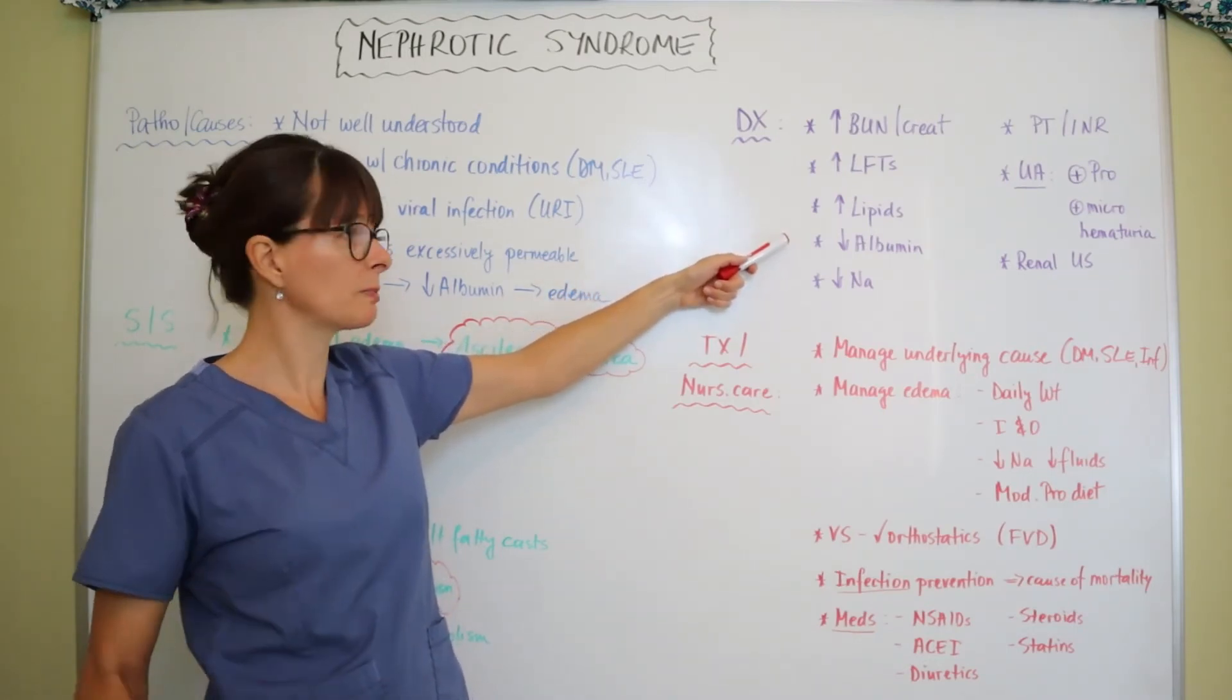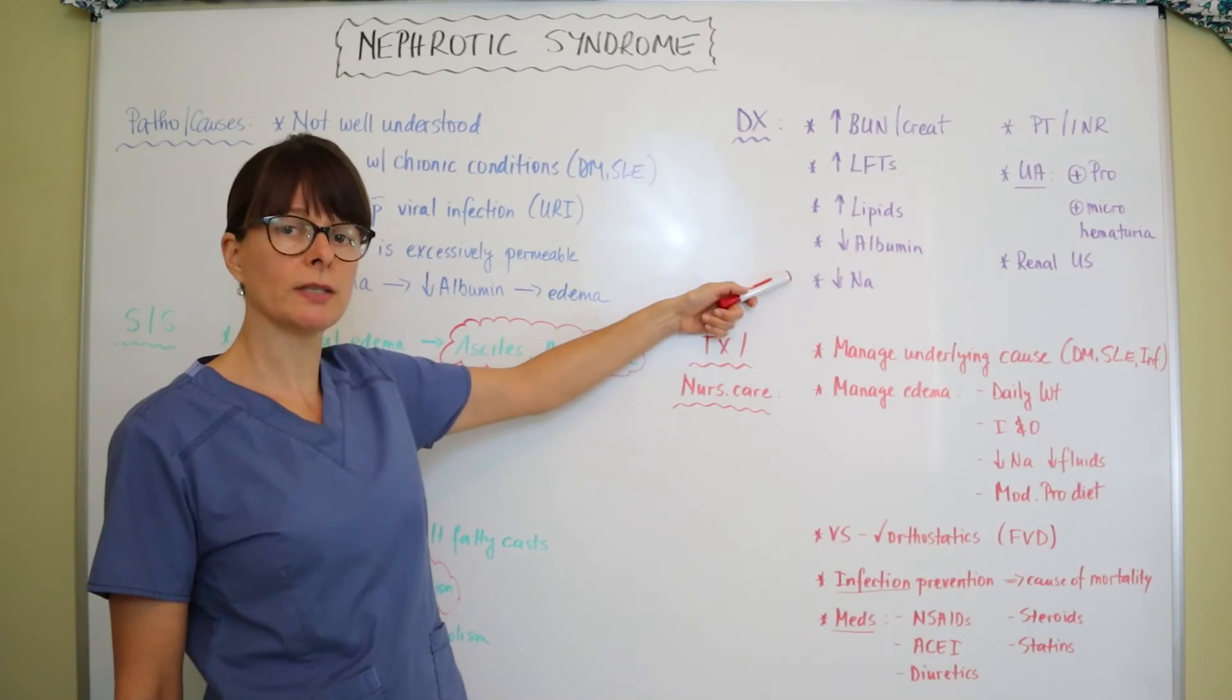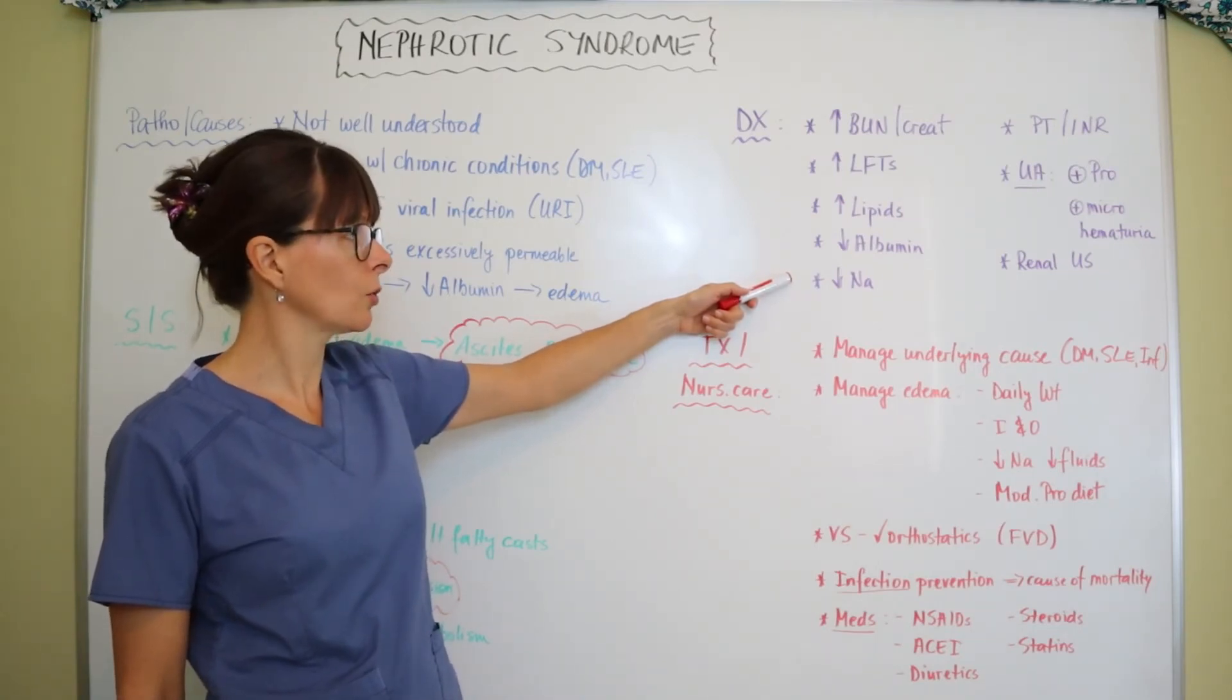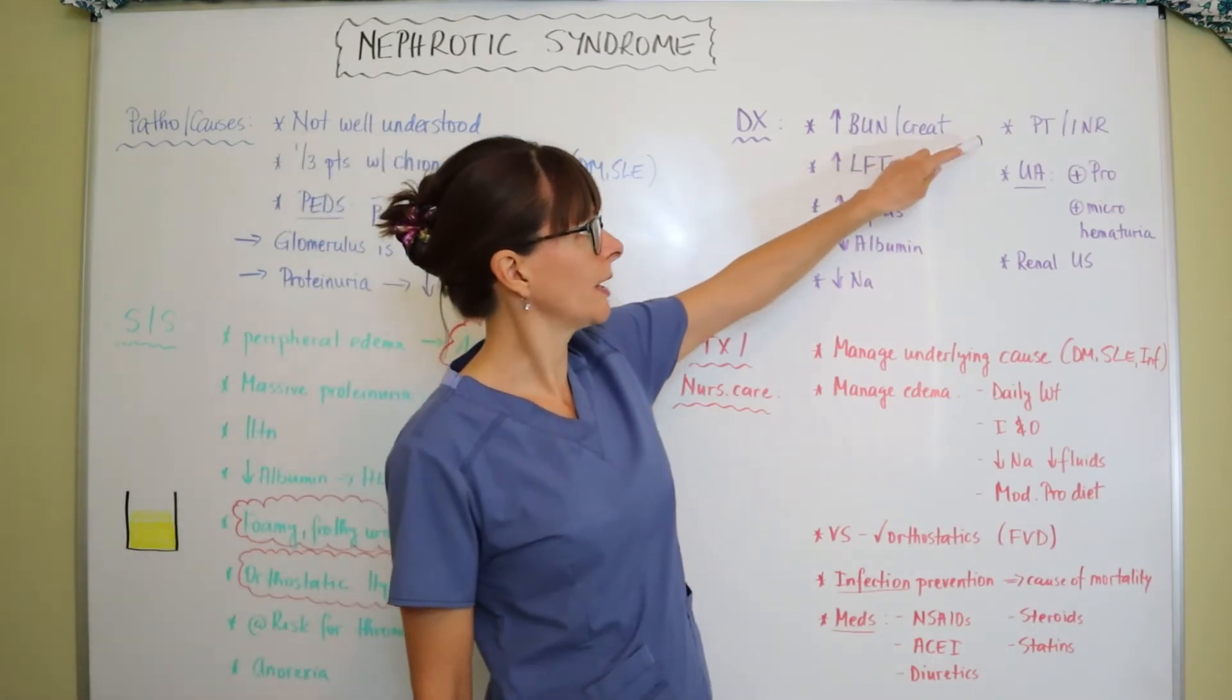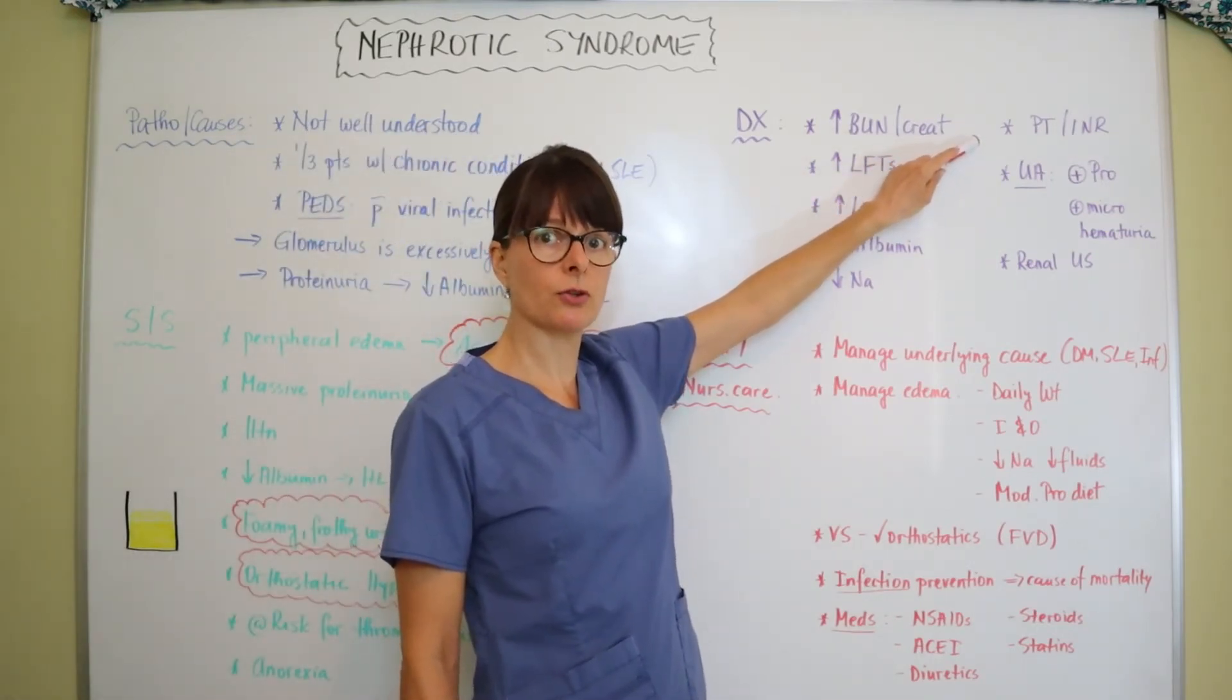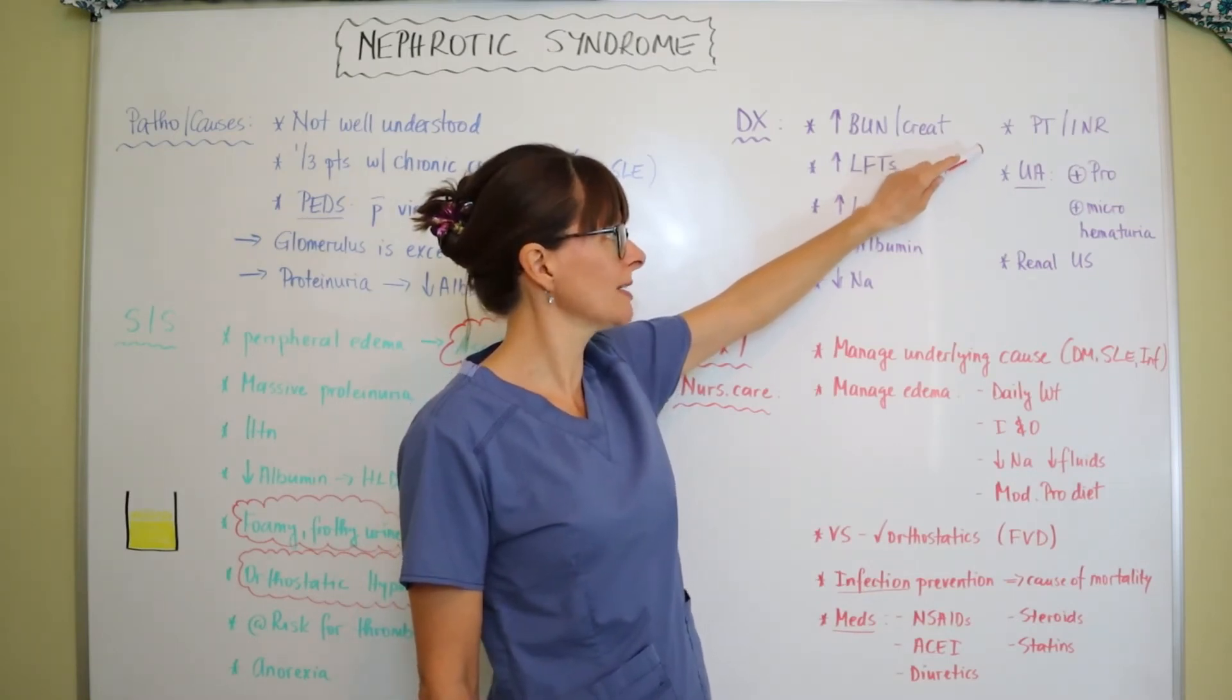Their sodium level will be low because it's going to be diluted in the bloodstream, so they will have low sodium. PTI and INR, we want to check that because we know that they're at risk for thromboembolism, so the coagulation studies will be very important.